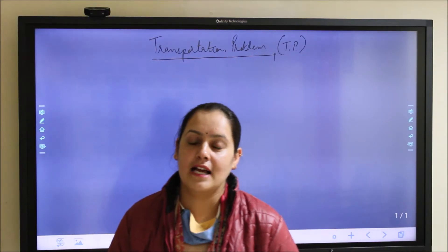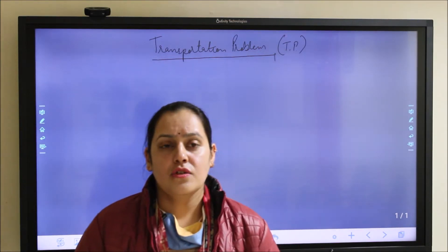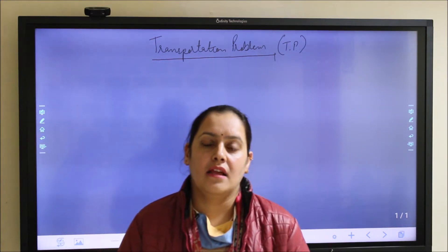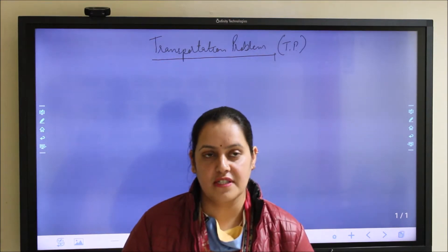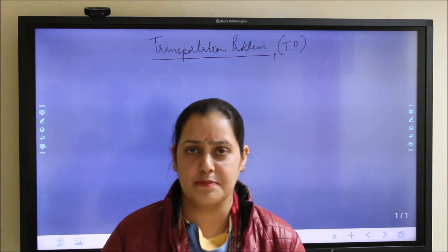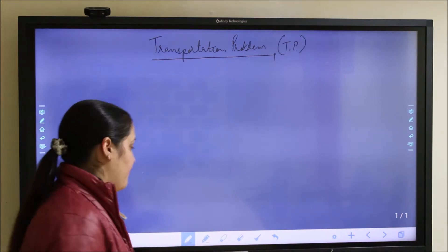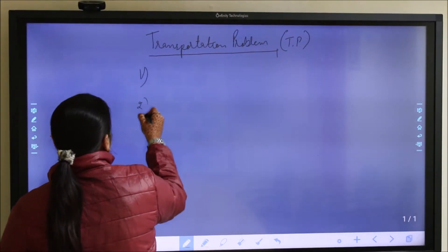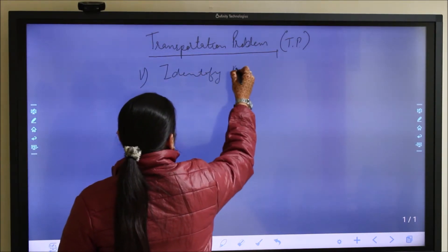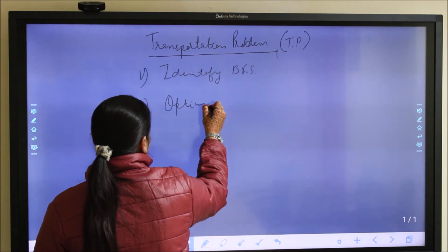Good morning students. In the last class we ended up with solving linear programming problems and today we are going to start with transportation problems. A transportation problem is an application of linear programming applied in the area of physical distribution of goods and services from certain supply points to certain demand points. Solving a transportation problem is divided into two phases: identifying the basic feasible solutions and then finding the optimal solutions.